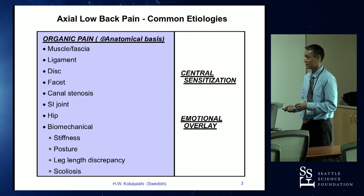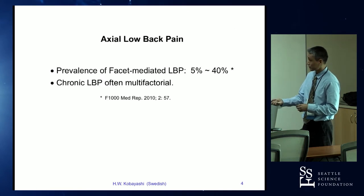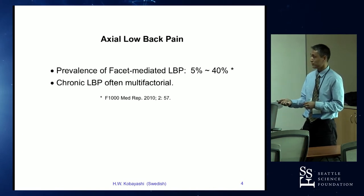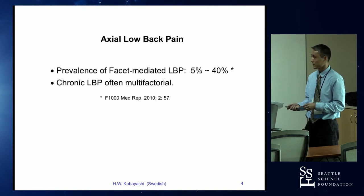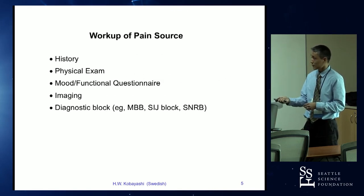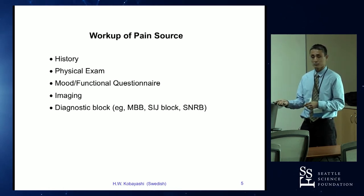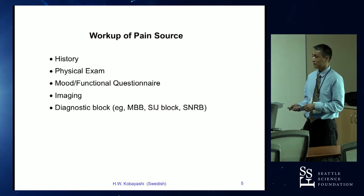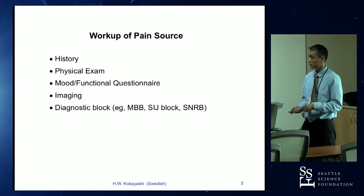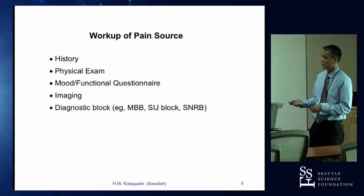If everybody could get fixed with intervention then life would be very easy for us. The prevalence of facet-mediated low back pain is highly variable — some papers say 5% and others say 40% — but chronic low back pain is most commonly multifactorial. We use history, physical exam, and other tools to tease out the source. We use the Oswestry functional questionnaire, hospital anxiety and depression scale, and other mood questionnaires. We look at MRI and sometimes do diagnostic injections such as medial branch blocks to help ascertain the source of the pain.